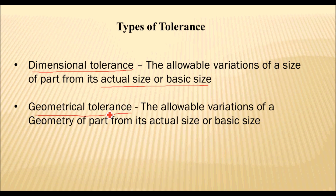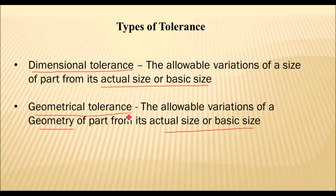Geometrical tolerance is due to geometrical variations in a part. It is defined as the allowable variation of the geometry of a part from its actual or basic shape. Suppose a part is manufactured in a shape — rectangle, circle, sphere, cylinder, or cone — but it is impossible to produce a part to its true shape, meaning a perfect sphere, perfect cone, or perfect cylinder cannot be produced. There will always exist some variations in its shape, and those variations are called geometrical tolerance.